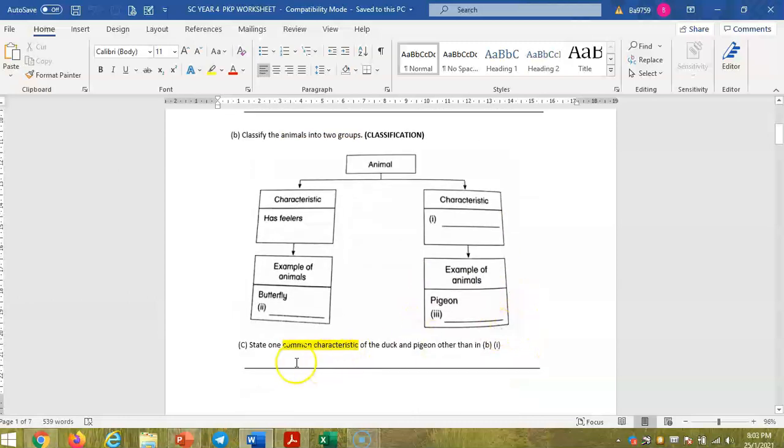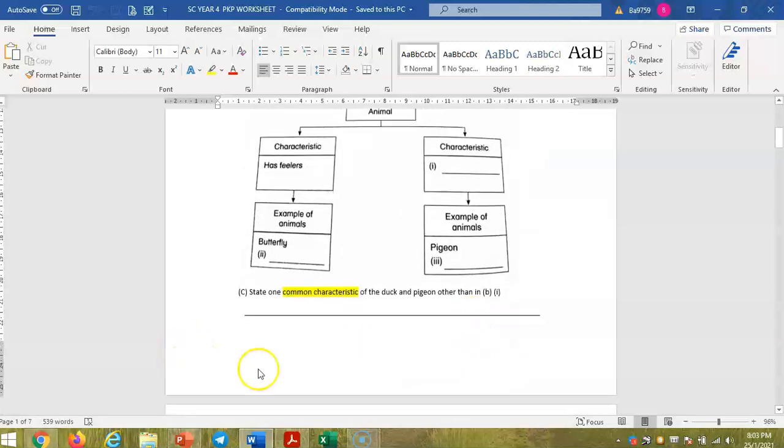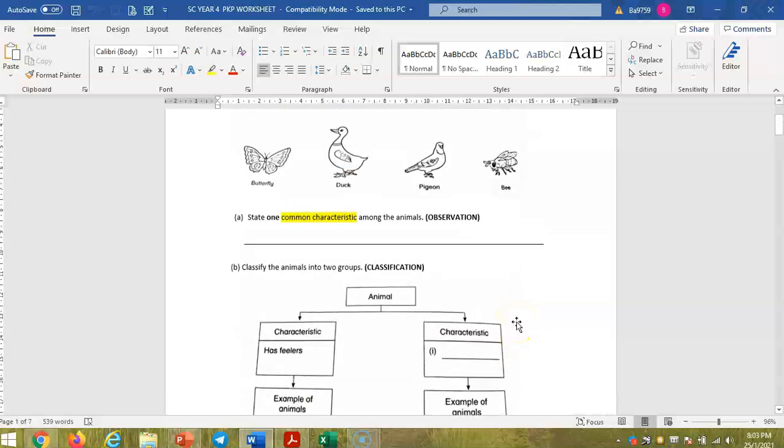Okay, for the third question, state one common characteristic of the duck and pigeon other than B1. So other than this characteristic, state another common characteristic between the duck and pigeon. Okay class, that's all for today. I hope you are clear with what is observing and classifying and you can complete your exercise. So please complete your exercise and send the capture to your teacher. Thank you so much. See you in next lesson class. Bye.